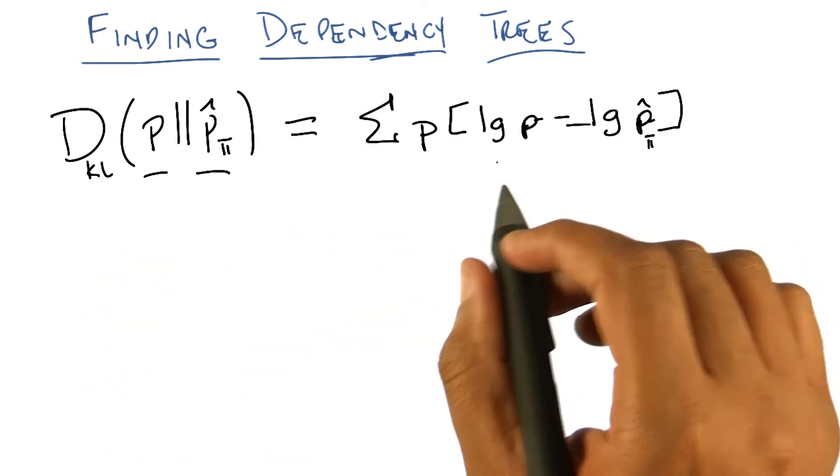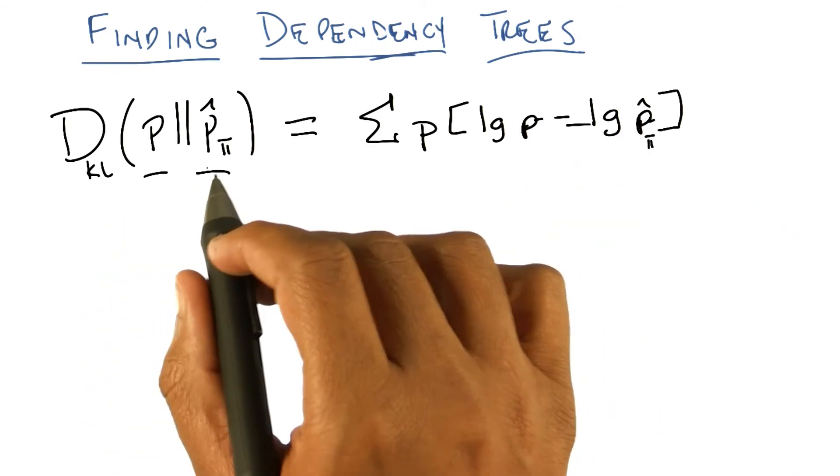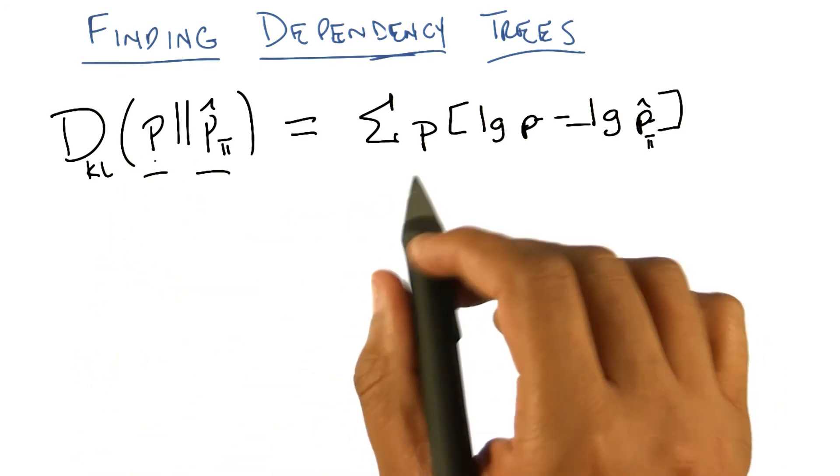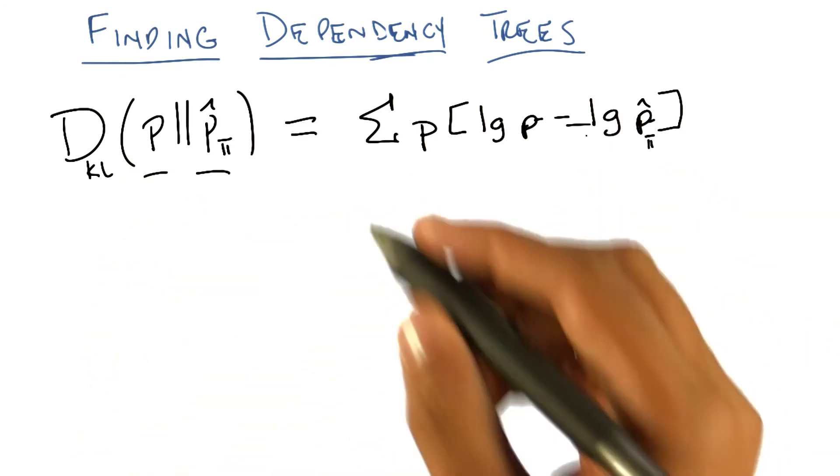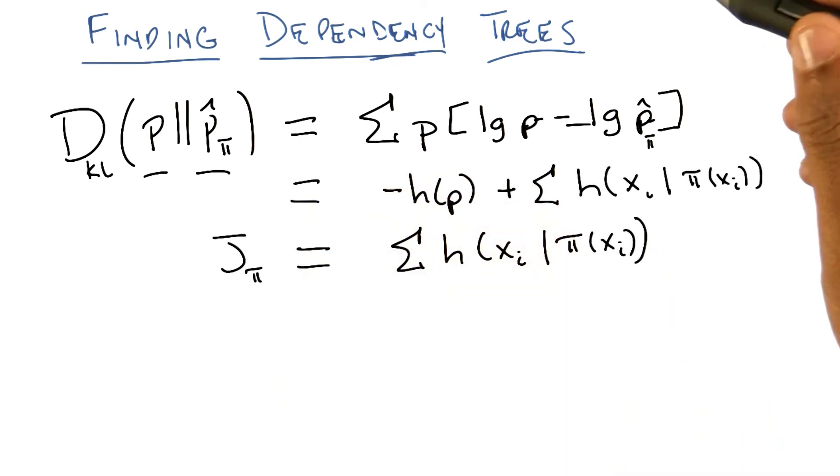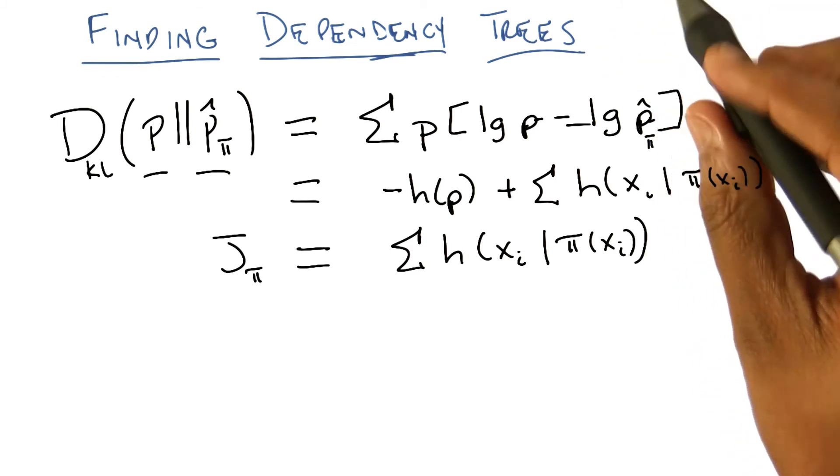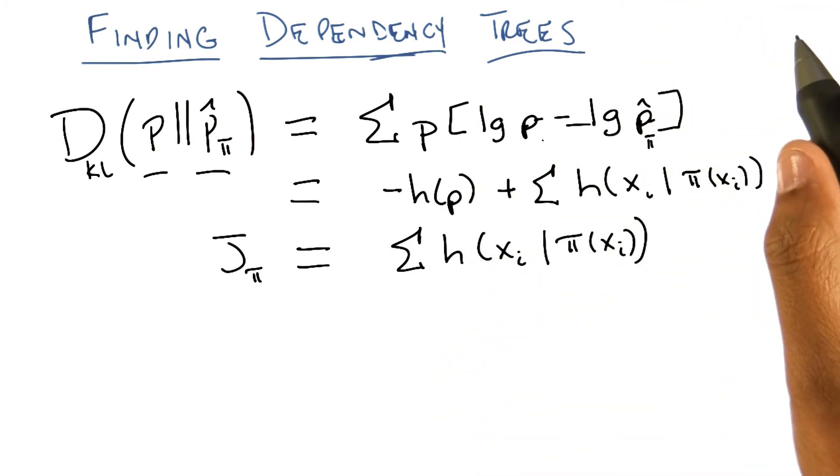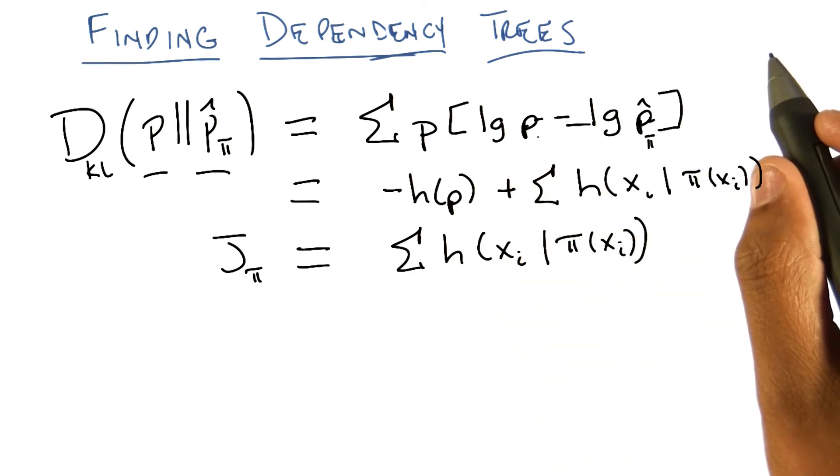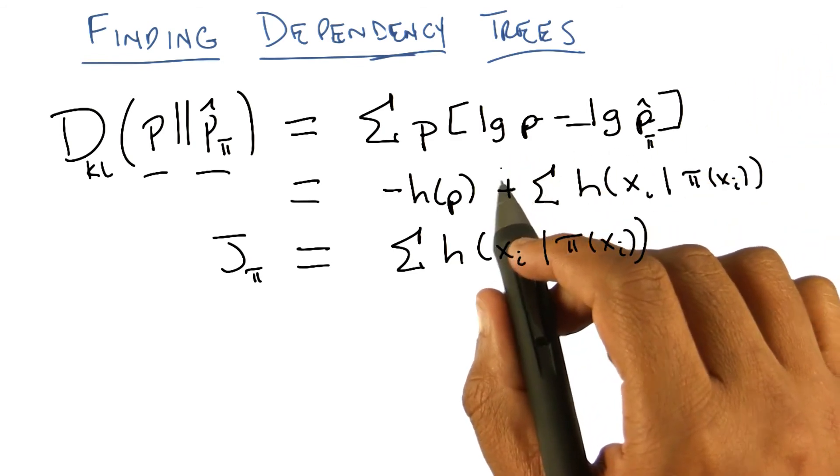That is, minimize the difference between the distribution that we're going to estimate with the dependency tree and the true underlying distribution. And just by doing some algebra, you end up getting down to what looks like a fairly simple function. So, Michael, if you were paying close attention to the algebra, you will realize that P log P, now that you've come back from Pushkar's lecture, is just entropy. Yep.